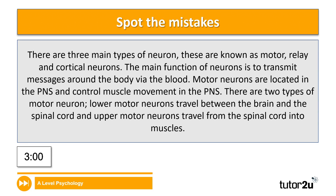Hopefully you were paying close attention as I was covering the detail of motor neurons, because we're going to have a go at an activity called 'spot the mistake.' On the screen you should see a chunk of text related to motor neurons; however, this text contains a number of mistakes. Your job is to rewrite this paragraph — question five on your worksheet — correcting the mistakes as you go along. You don't need to pause the video; there's going to be a timer on screen counting you down for three minutes.